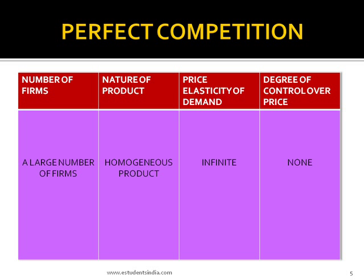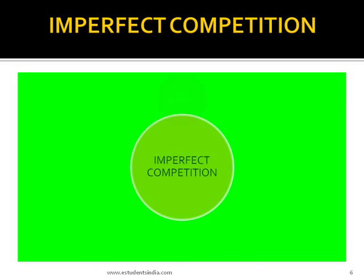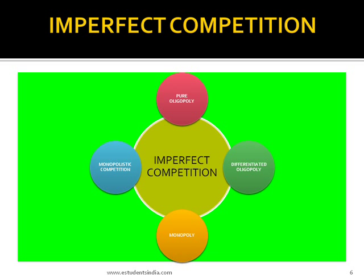The number of sellers is large. The output of one seller is only a small proportion of the total output of the commodity. The products of various sellers are homogenous from the viewpoint of the consumers. There is no control over the price for an individual seller. In perfect competition, individual firms exercise control over the price to a smaller or larger degree — that is imperfect competition.